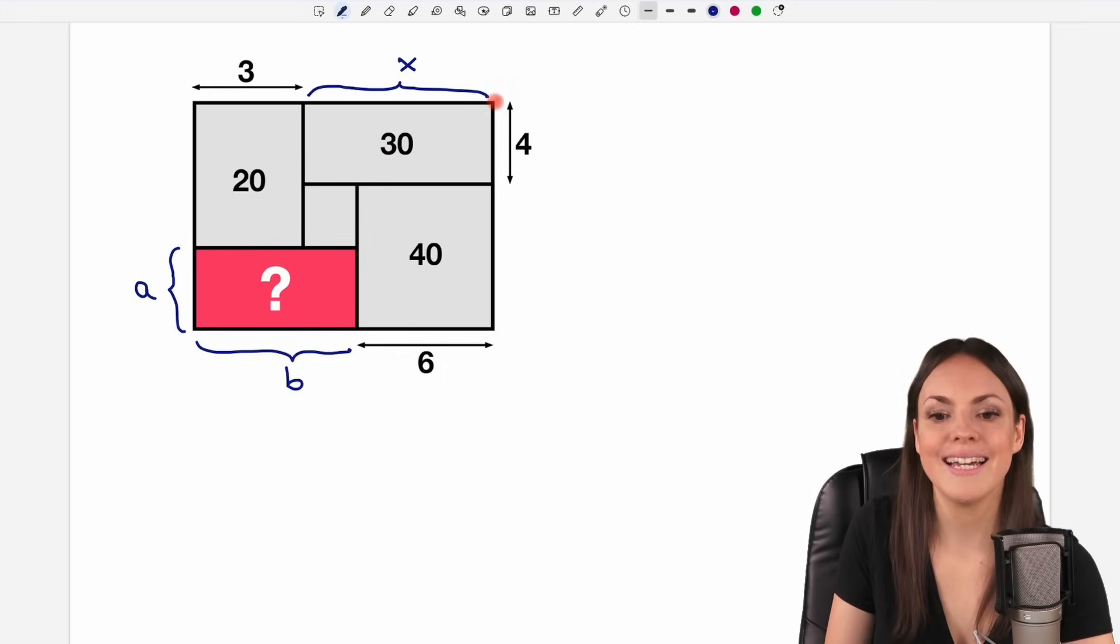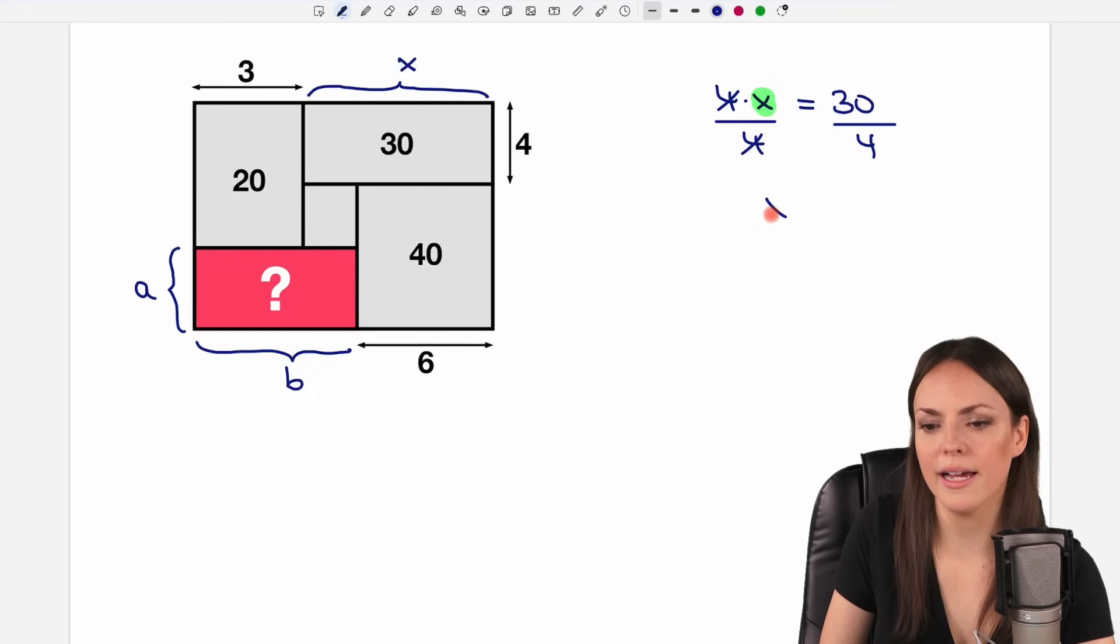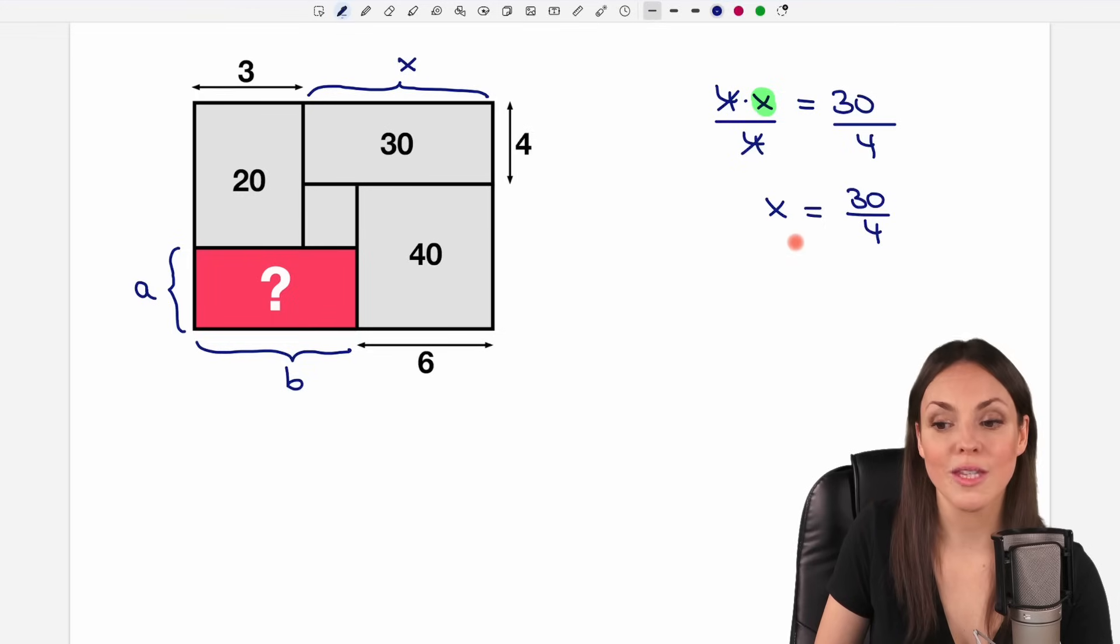So 4 times x has to equal 30. And I can solve this equation for x now. I just want to get rid of the 4, so I divide both sides of the equation by 4. This cancels out here, only my x is left, and here I have 30 over 4. So this is the length I was looking for, for the side of my rectangle.